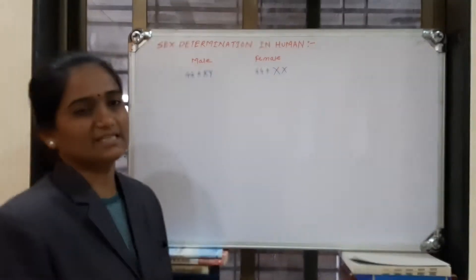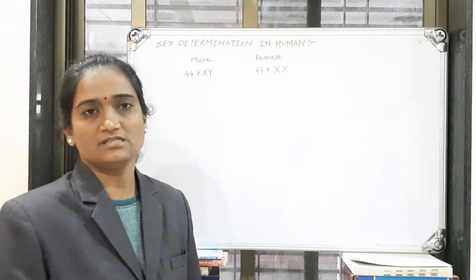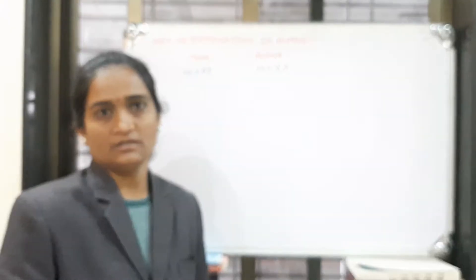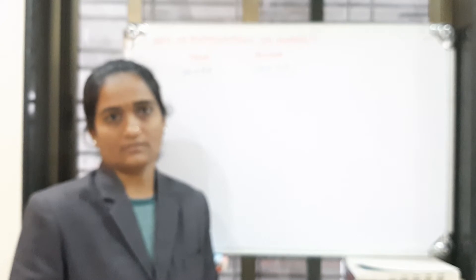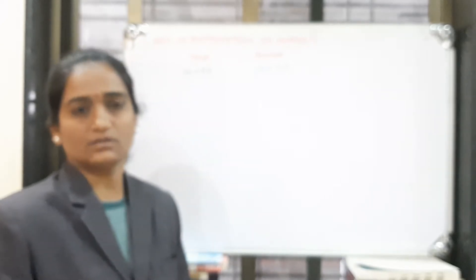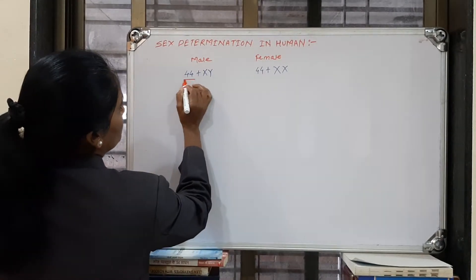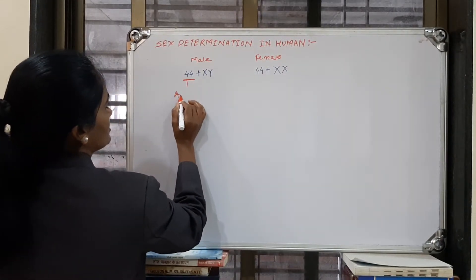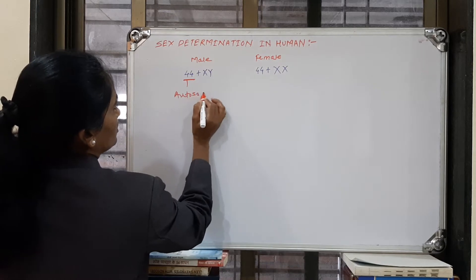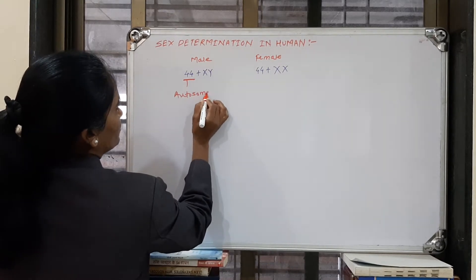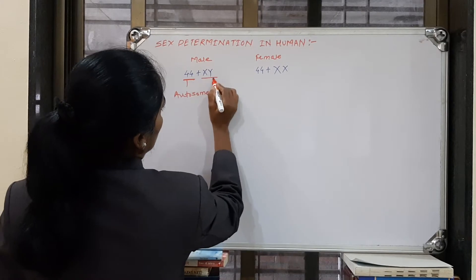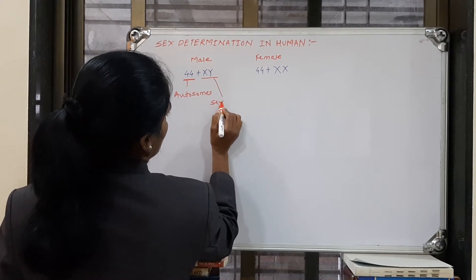Human beings show a total of 46 chromosomes in their genome. Out of those 46 chromosomes, 44 are autosomes and the remaining two are sex chromosomes.